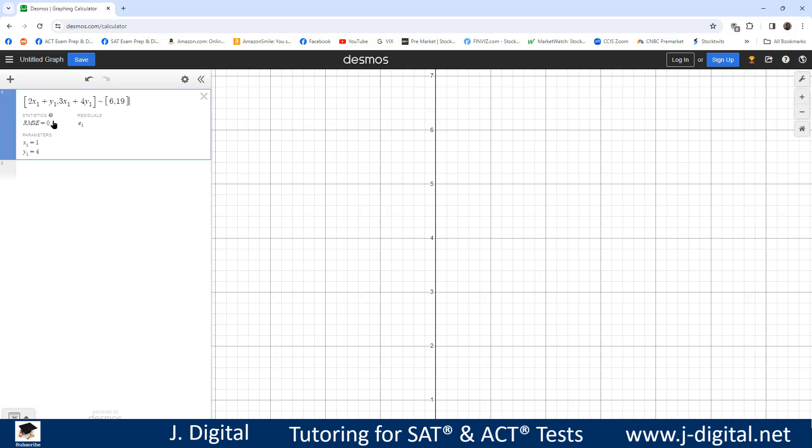Now my original equations were 2x plus y equals 6 and 3x plus 4y equals 19. So the left sides of my equations were these two. So I want to figure out values of x1 and y1.